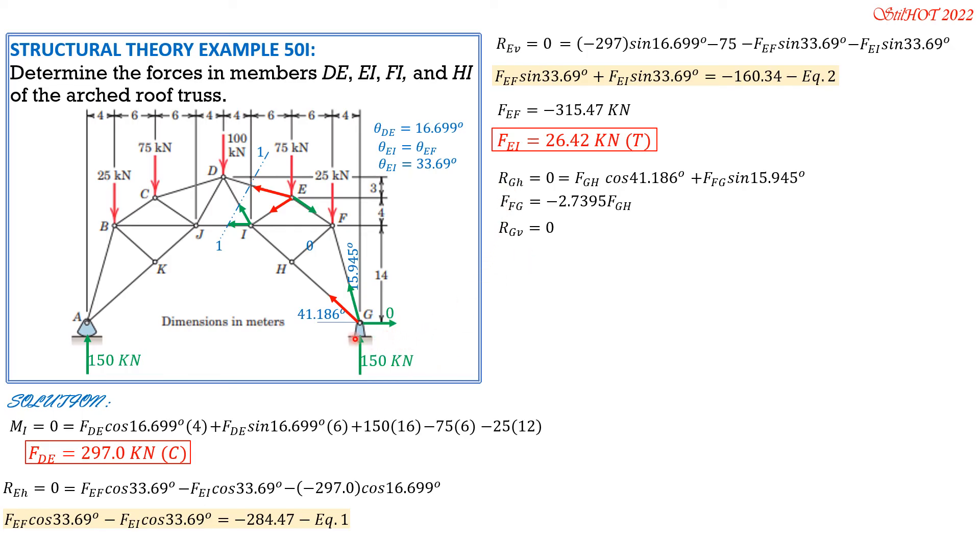Vertical component of resultant at G zero. Vertical component of FGH is FGH sine of 41.186 degrees plus FFG cosine of 15.945 degrees, then plus 150. Replacing FFG with negative 2.7395 FGH cosine 15.945 degrees plus 150, now we can solve FGH. FGH is equal to 75.93 kilonewtons. It is positive, so it is tension. Since FGH is FHI, FHI is 75.93 kilonewtons tension.